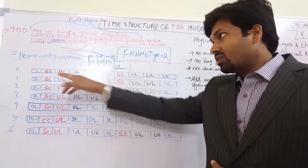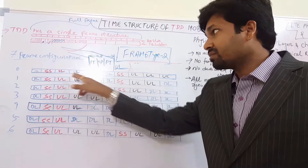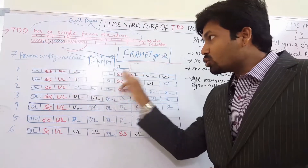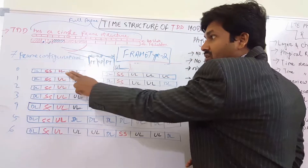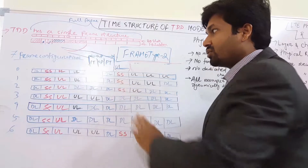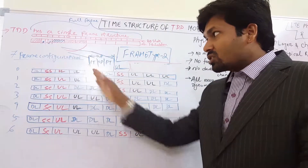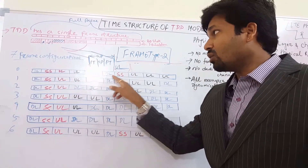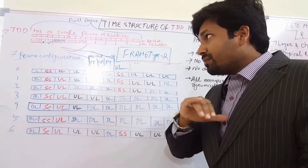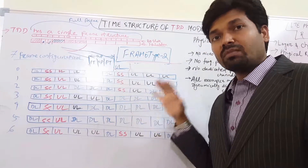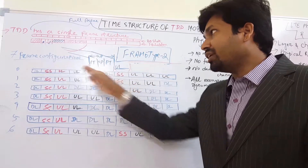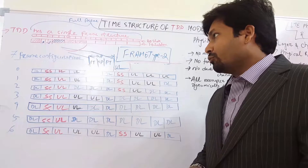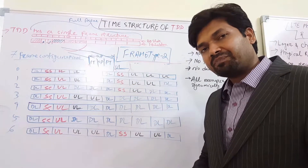Then the differentiation starts. For frame type 0, we have 6 uplink subframes, 2 downlink subframes, and 2 special subframes, because we are switching from downlink to uplink 2 times. This can be used as a half frame because this half frame is just copied in the second half: downlink, special subframe, uplink, uplink, uplink, then downlink, special subframe, uplink, uplink, uplink. So frame configuration type 0 has maximum uplink frames and minimum downlink — only 2 downlink subframes.